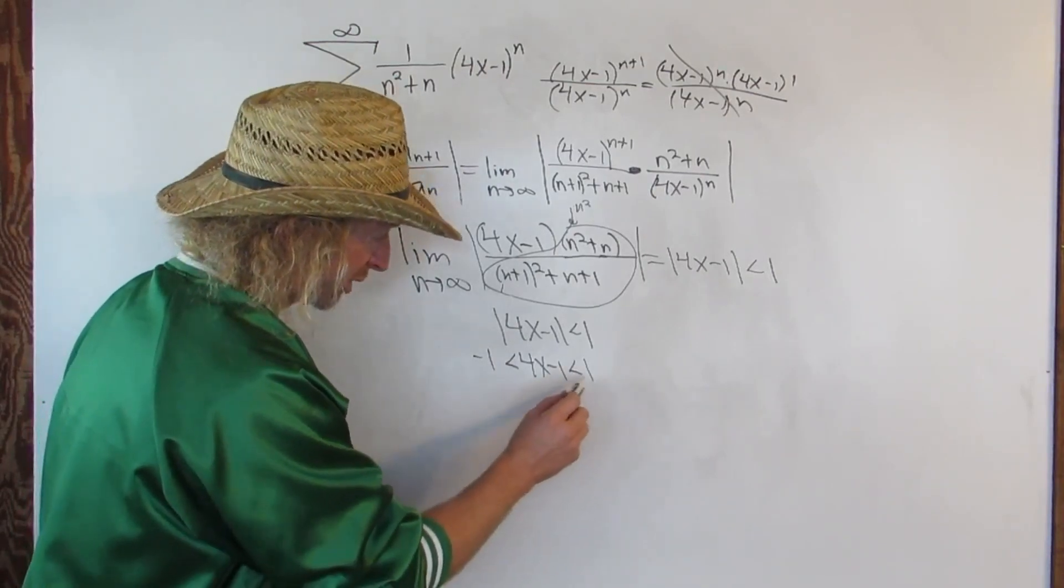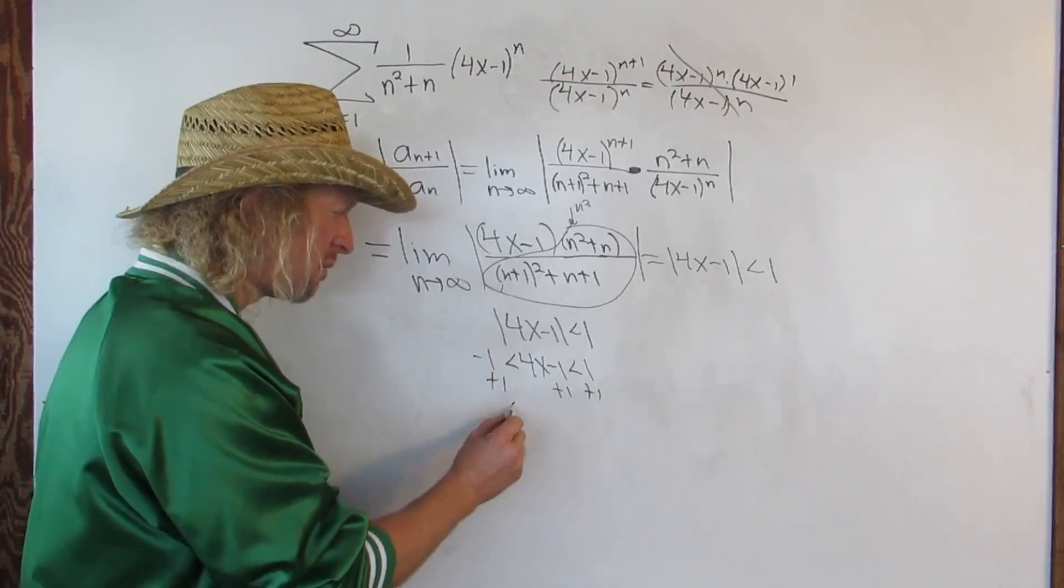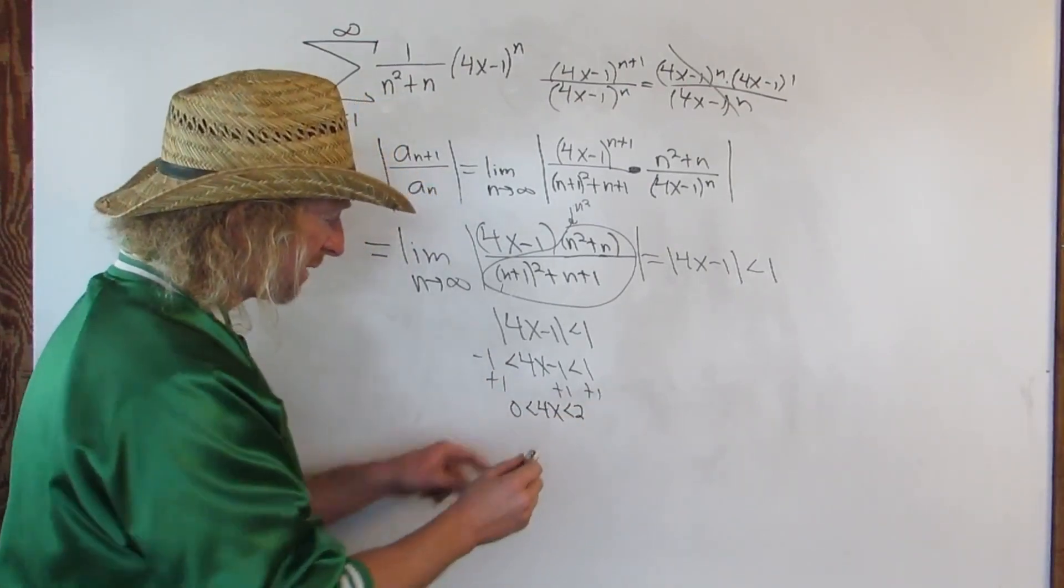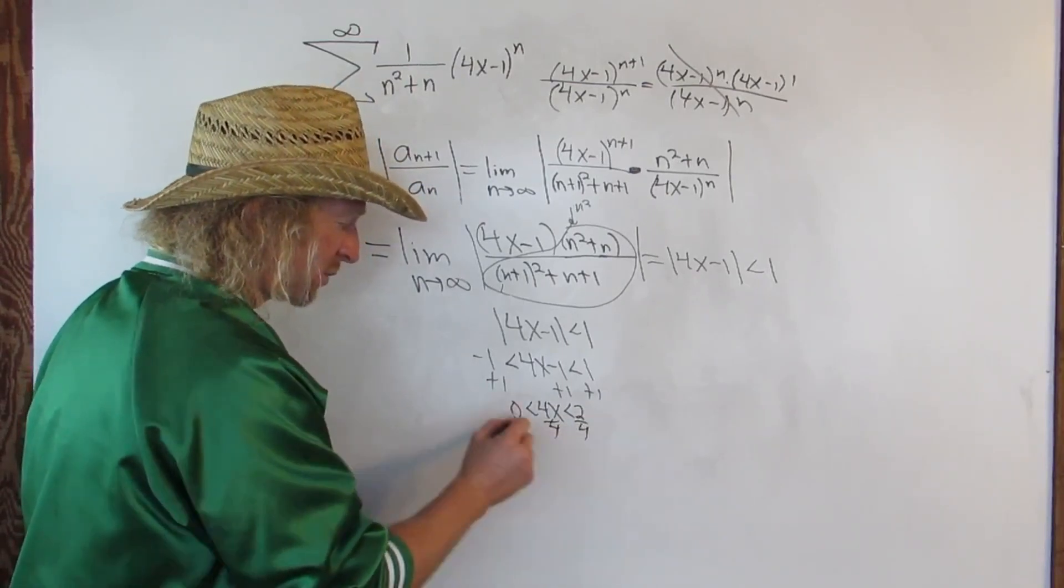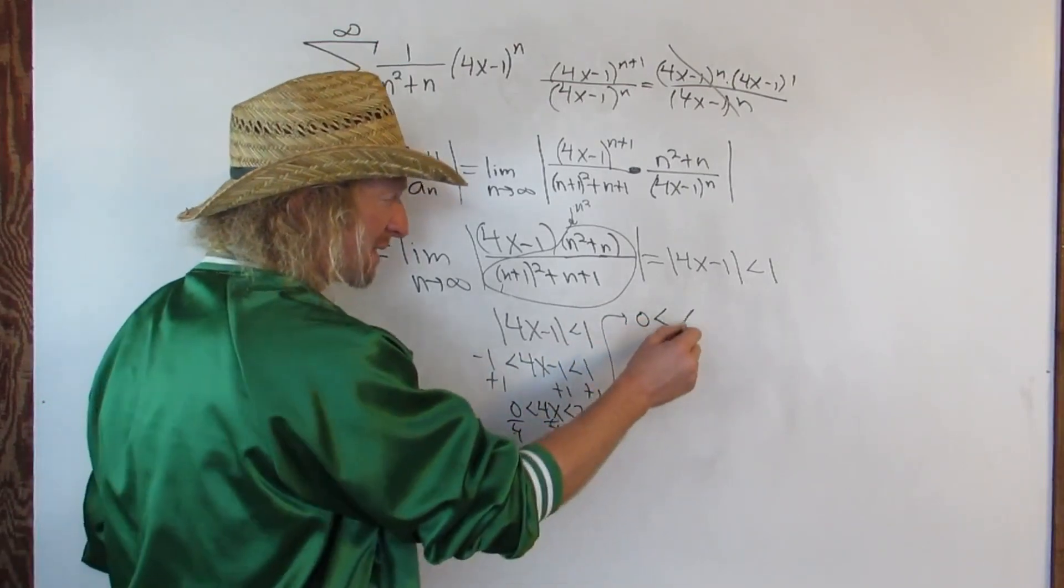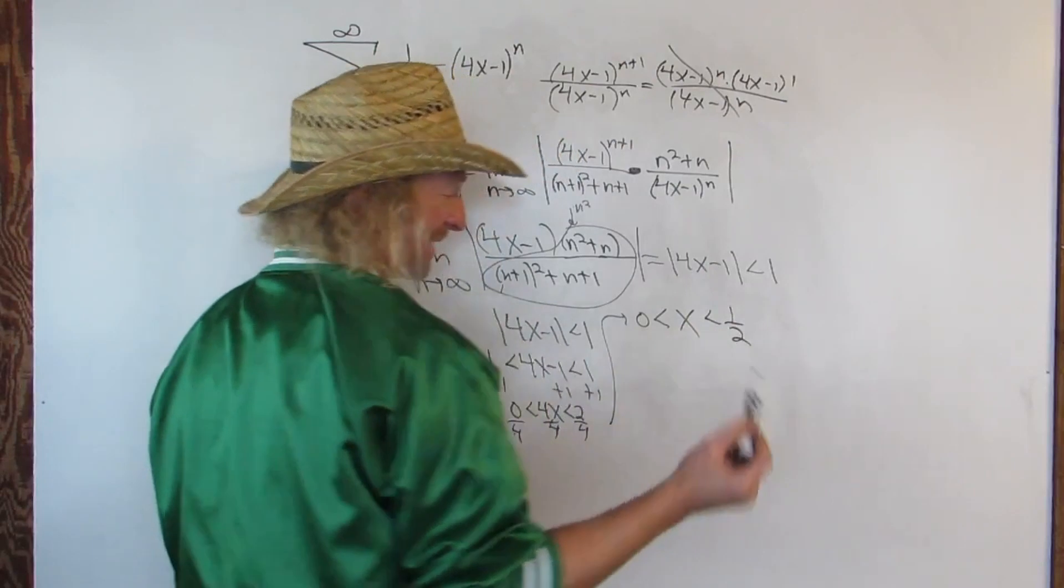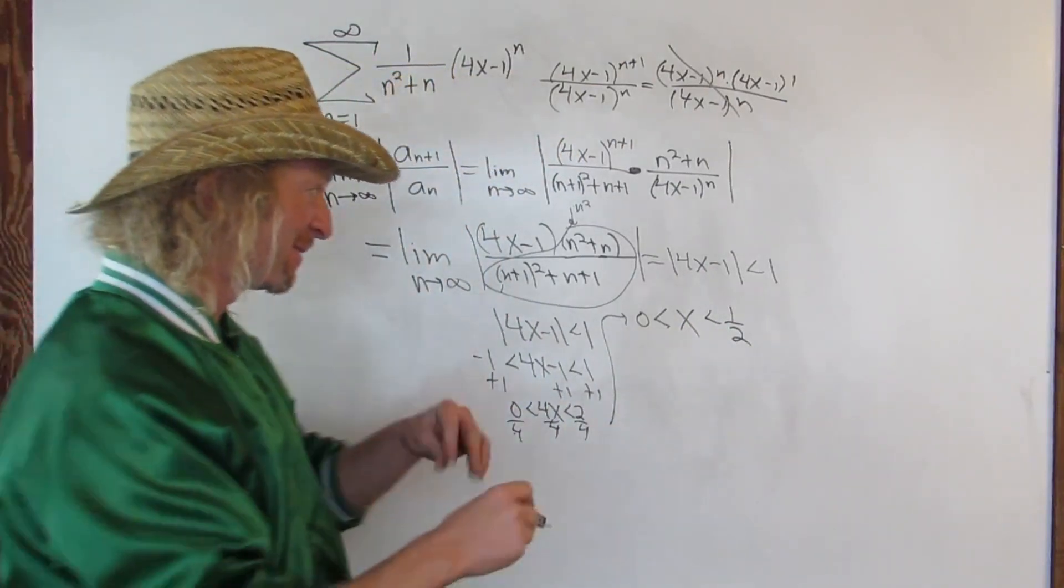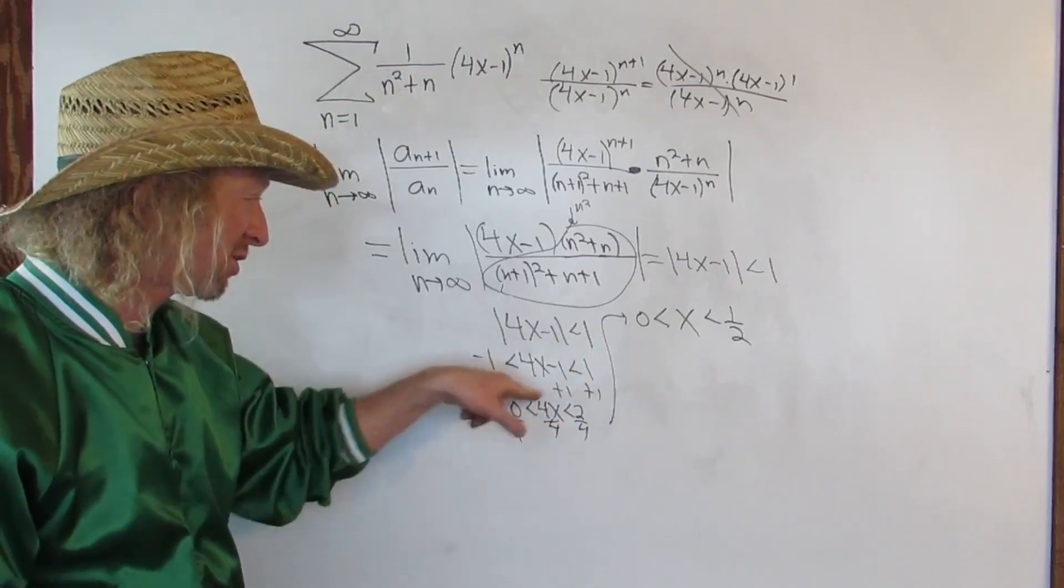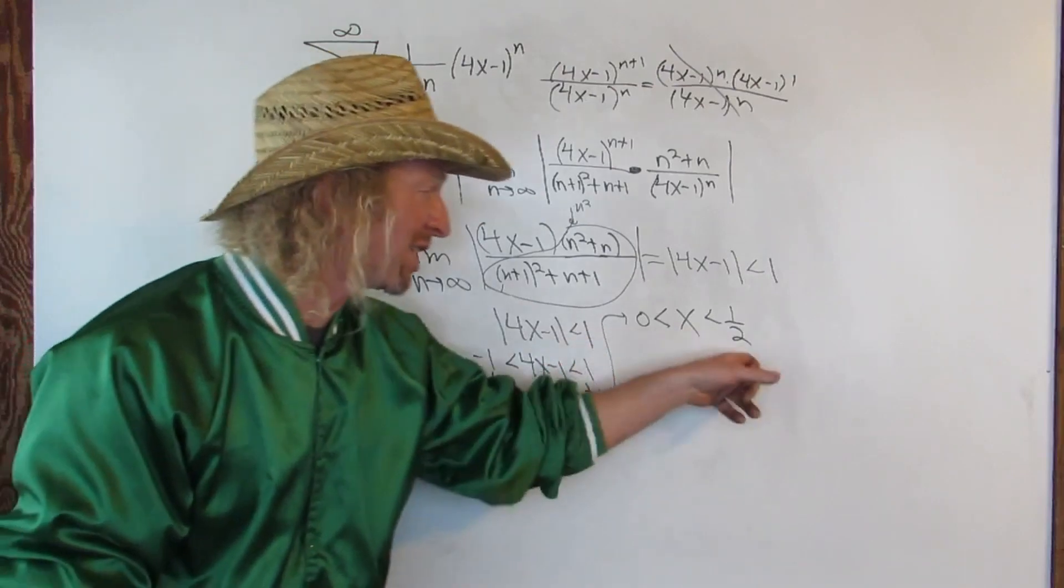And you add 1 to all the sides. So it would be plus 1, plus 1, plus 1. So it's 0, 0, less than 4x, less than 2, divide by 4, divide by 4. So we get 0 over 4 is 0, less than x. Going kind of fast, I think my camera is going to die. Less than 1/2. I hope it doesn't die at the very end, right when I'm about to finish. So don't forget to put a 1 and a negative 1. Then you just solve for x, and you get here. Almost done. Almost done. Now we just got to check the endpoints.